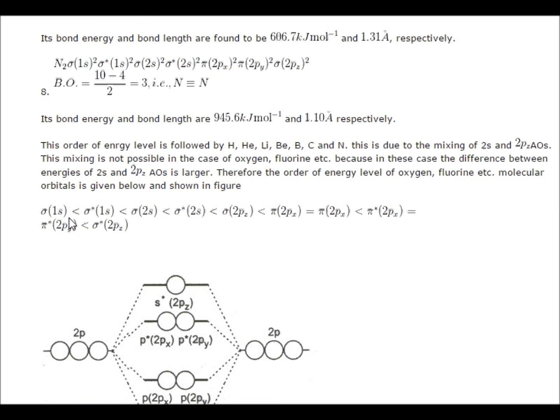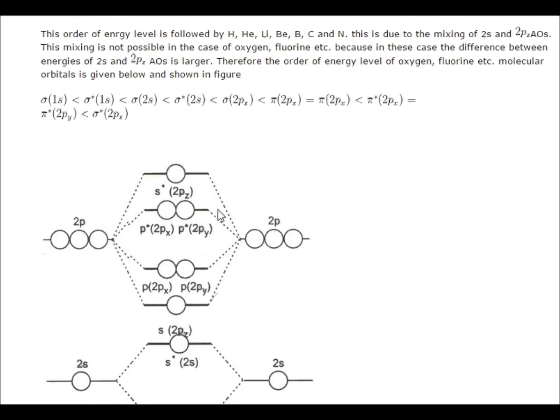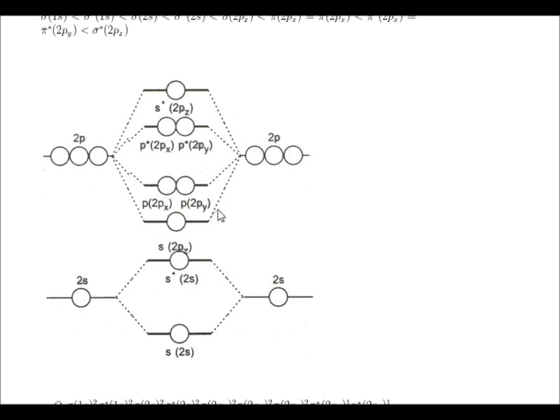Sigma 1s to sigma star 1s to sigma 2s, this is the order you can write bonding and non-bonding electrons using this formula for this order.